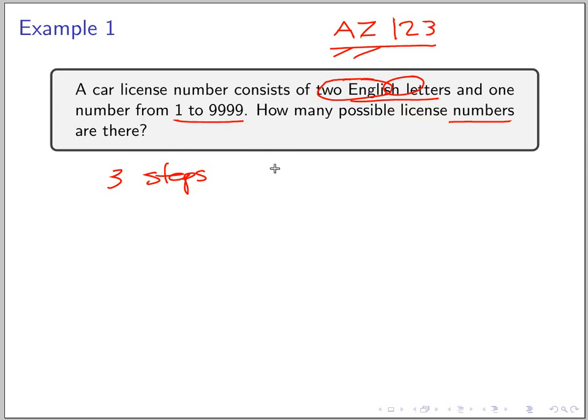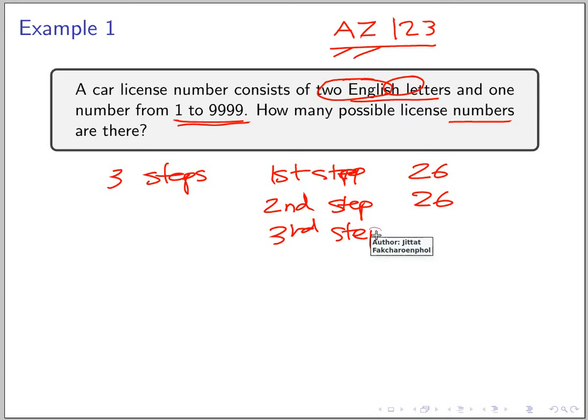In the first step, you have 26 choices. In the second step, you also have 26 choices. And in the last step, the third step, you pick the number. How many choices do we have? 9999. So the number of possible license numbers is 26 × 26 × 9999.